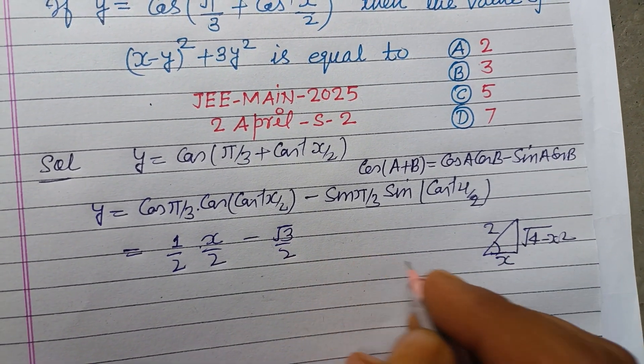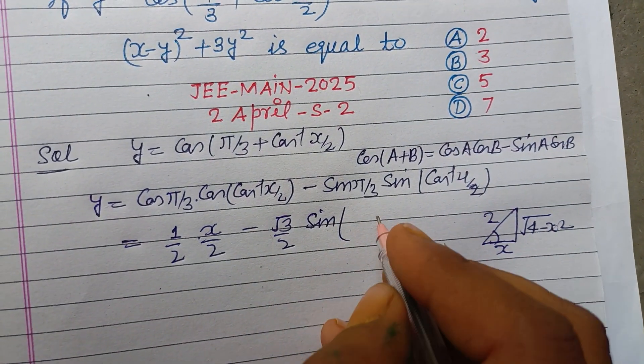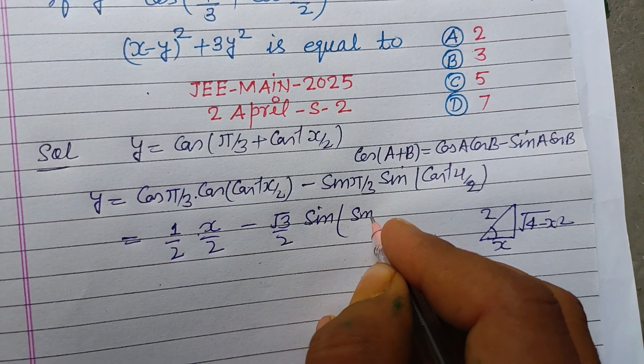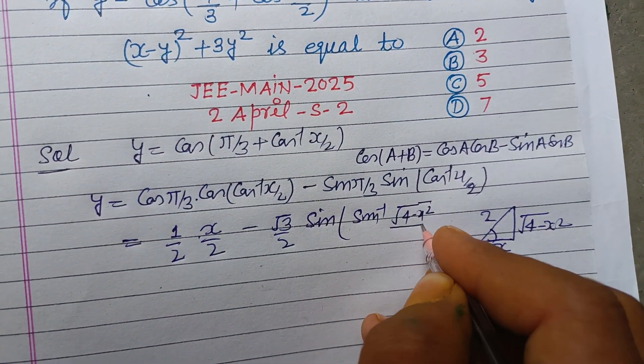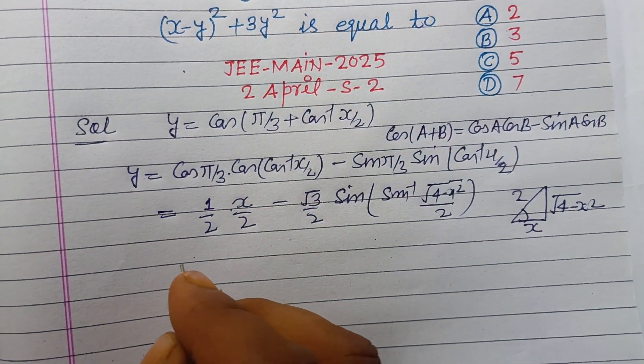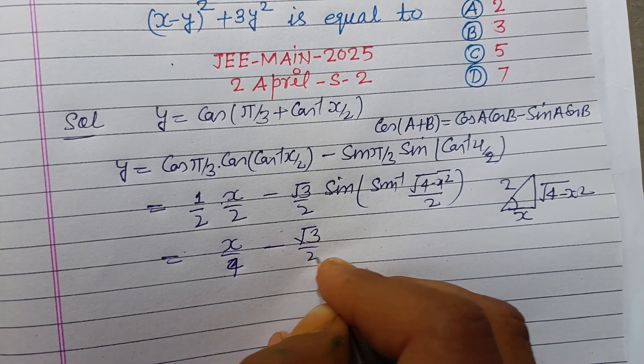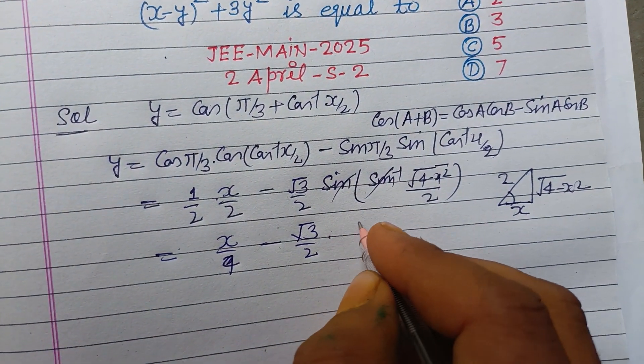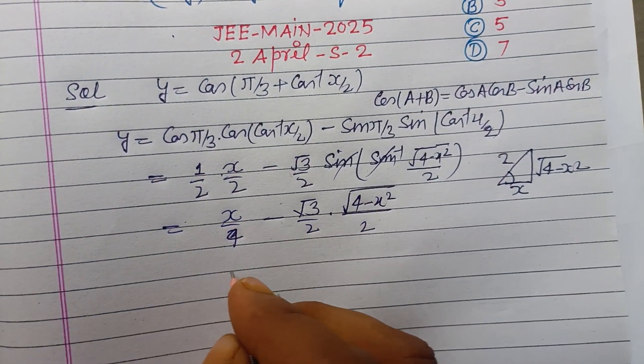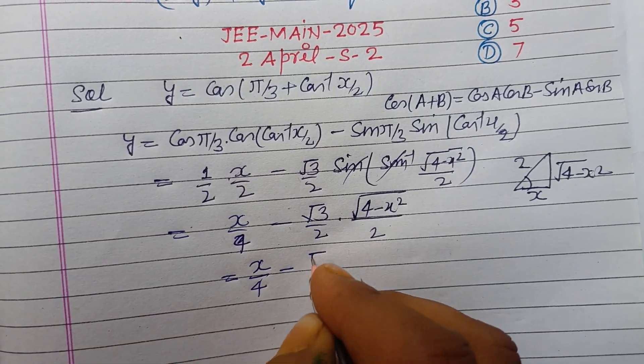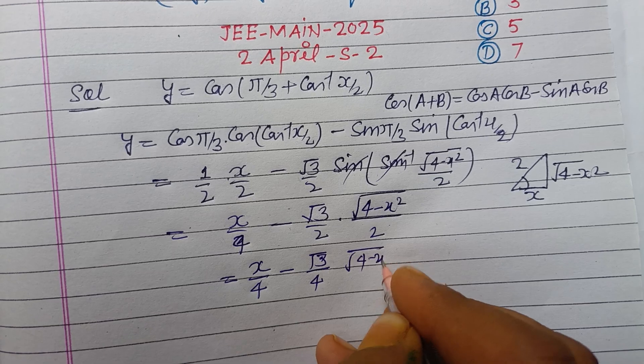Therefore if you put sin(cos inverse xy/2), it means sin inverse under root (4 - x square) over 2. So xy/4 minus root 3 over 2, sin sin cancel, root (4 - x square) over 2. So xy/4 minus root 3 over 4 times root (4 - x square).